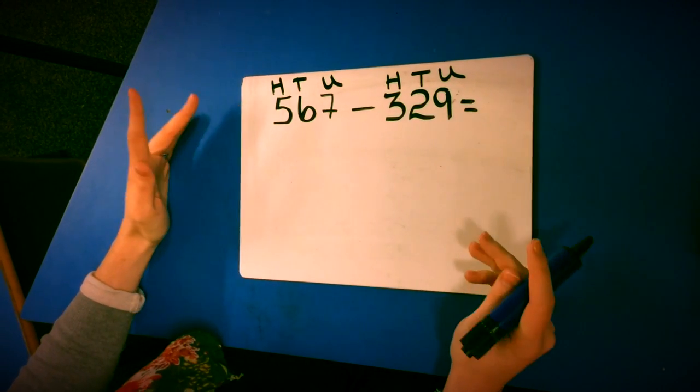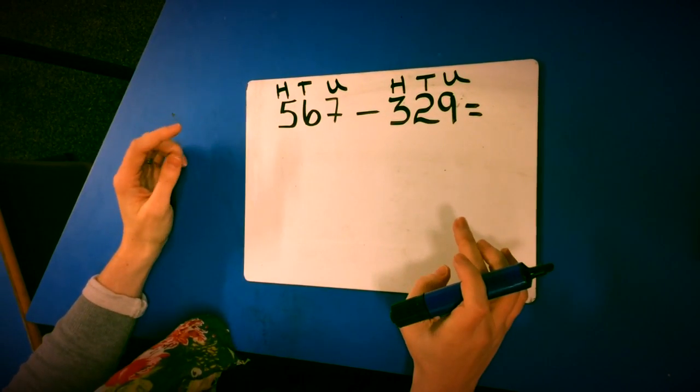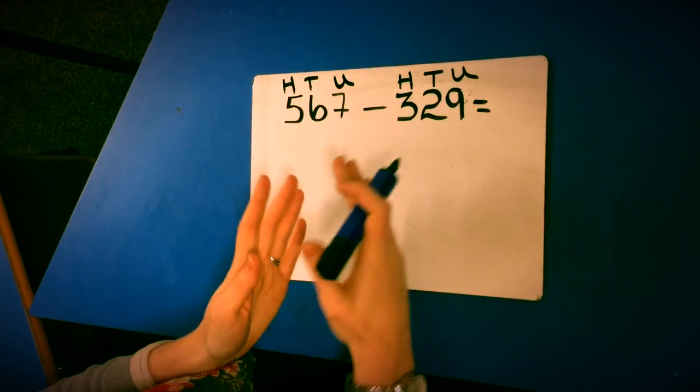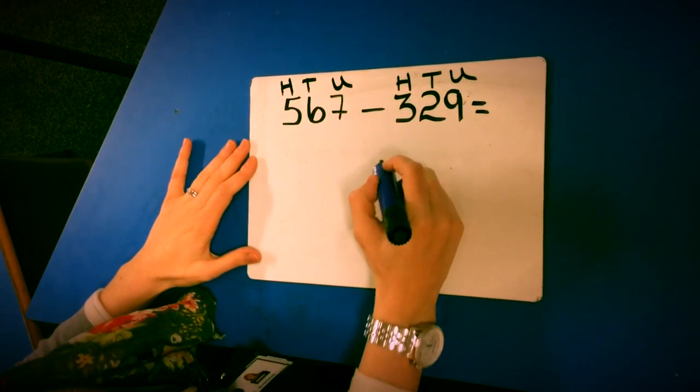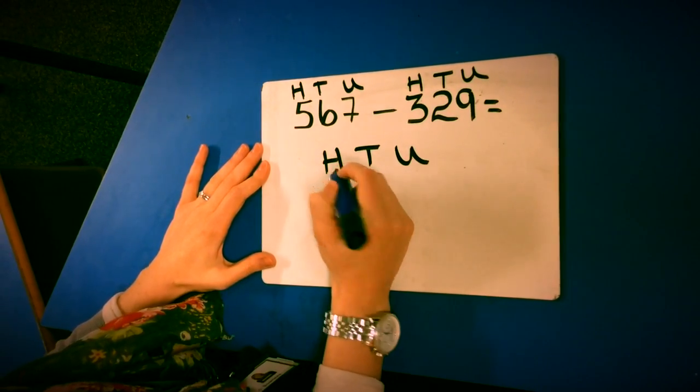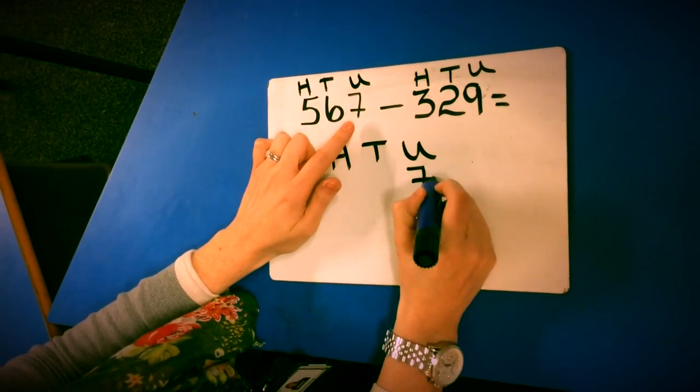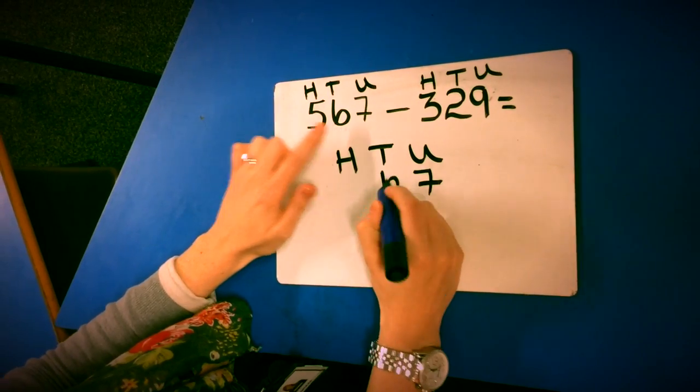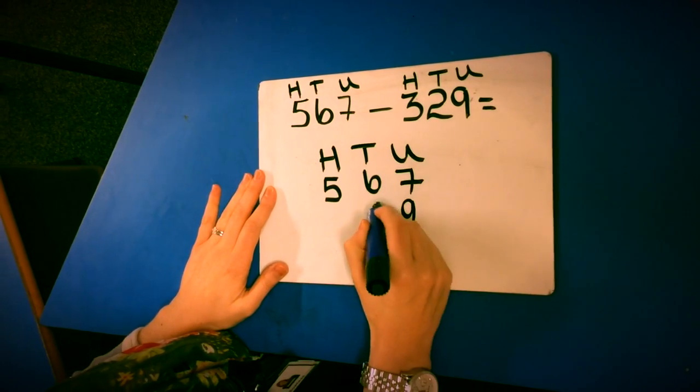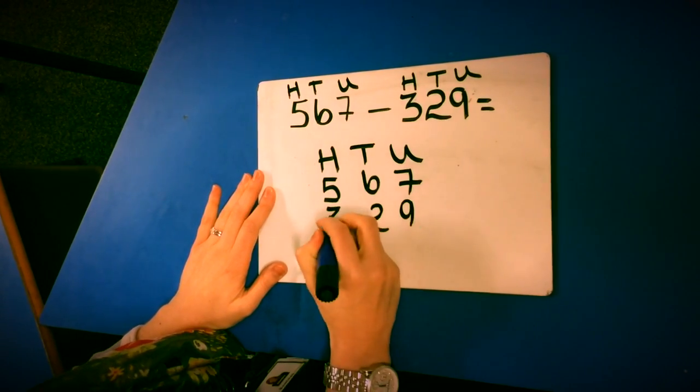Again, this is just to reinforce the children's understanding of the value of each digit and to make sure that they line up their calculation. So I'm going to do my calculation. I've got 7 units, 6 tens and 500. 9 units, 2 tens and 300.